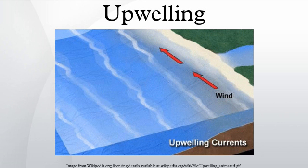Coastal upwelling is the best known type of upwelling, and the most closely related to human activities as it supports some of the most productive fisheries in the world. Wind-driven currents are diverted to the right of the winds in the Northern Hemisphere and to the left in the Southern Hemisphere due to the Coriolis effect. The result is a net movement of surface water at right angles to the direction of the wind, known as the Ekman transport. When Ekman transport is occurring away from the coast, surface waters moving away are replaced by deeper, colder, and denser water.